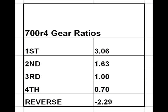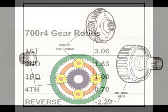The gear ratios for this transmission are shown here. They are 1st gear 3.06 to 1, 2nd gear 1.63 to 1, 3rd gear 1 to 1, 4th gear 0.7 to 1, and reverse 2.29 to 1.